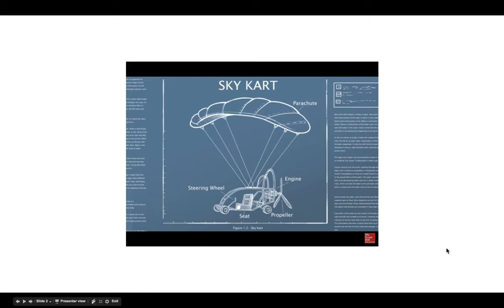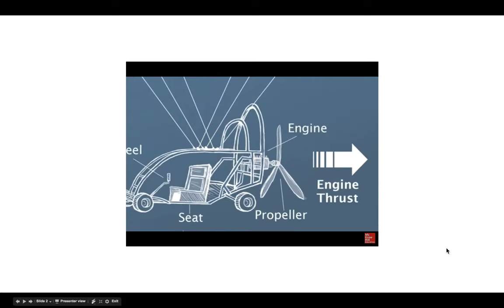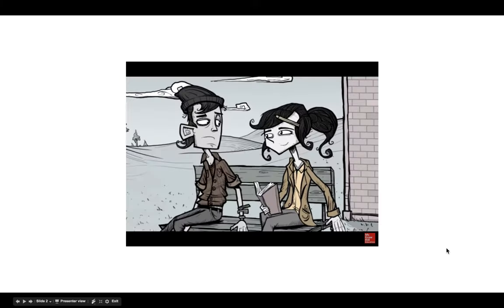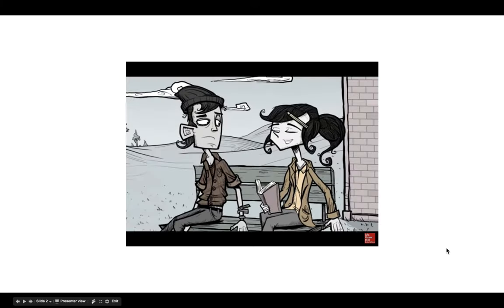So the propeller on the back thrusts the cart forward. And the parachute gives it lift. Look at the size of the engine. That has to be pretty loud. It seems like it would be pretty easy to follow someone in one of these. That's why this is such a mystery. No one was ever caught.